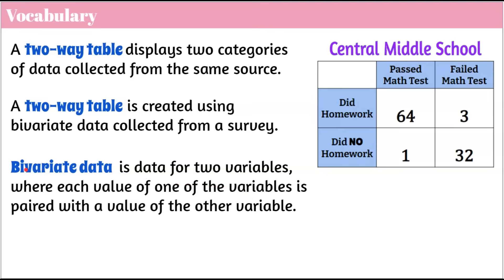Bivariate — just like bicycle — means two. So students were asked two questions: Did you do your homework? Did you pass your math test? The answer to did you do your homework had two different outcomes: you passed or you failed. And if you answered no, you didn't do your homework, you still either passed or failed. So we have four different categories in our two-by-two bivariate data table, and we want to see if there's a connection between doing or not doing your homework and passing or failing your math test.